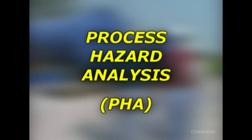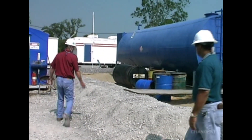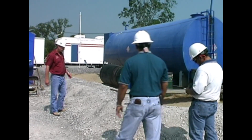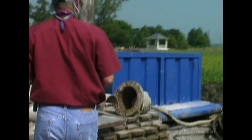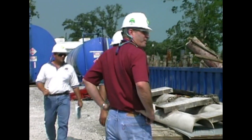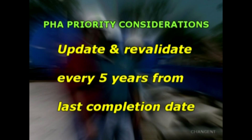Once the process safety information has been completed and reviewed, the Process Hazard Analysis, or PHA, can begin. The analysis is a thorough, orderly, systematic approach for identifying, evaluating, controlling, and preventing accidental releases in processes involving highly hazardous chemicals. The methodology must be selected according to the complexity of the process. Employers must first determine and document the priority order for conducting the PHA, using considerations such as the extent of hazards, the number of potentially affected employees, and the age and operating history of the process. All process hazard analyses must be updated and revalidated every five years from their latest completion date.